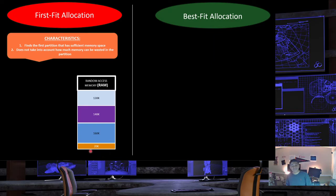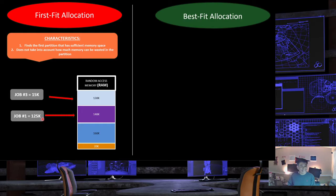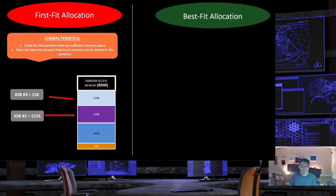Following the RAM example with four partitions, job three requires 15K but takes a 130K partition, wasting 115K of space. Job one needs 125K and takes the 140K partition. However, job one could easily fit in the 130K partition, wasting only 5K instead — we could be utilizing memory in a more efficient way if job one used the 130K partition.